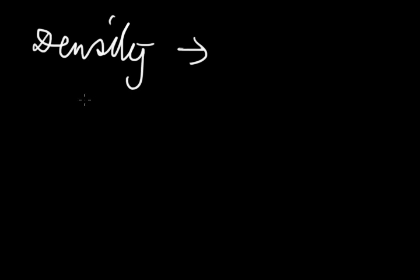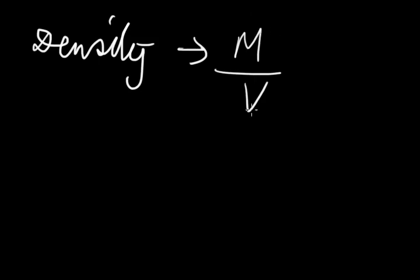When temperature changes, the volume of a body changes but mass remains unchanged. Density equals mass divided by volume (M/V). If temperature increases, volume increases, so M/V decreases — density decreases. If temperature decreases, the body contracts, volume decreases, so M/V increases — density increases. Therefore, we must specify the temperature when stating the density of a substance.